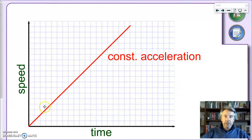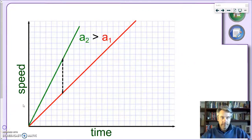In a graph, this will represent a straight line, especially if you're starting from speed equals 0, you'll have a straight line. So any straight line like this one will represent a constant acceleration. Remember, in a distance-time graph, a line like this would have represented a constant speed.